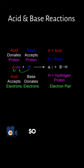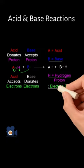The A stands for acid, the B stands for base, the H is the hydrogen proton, and the colon is the electron pair.